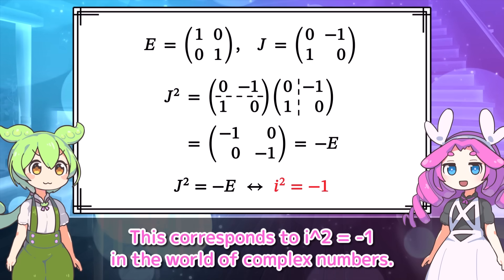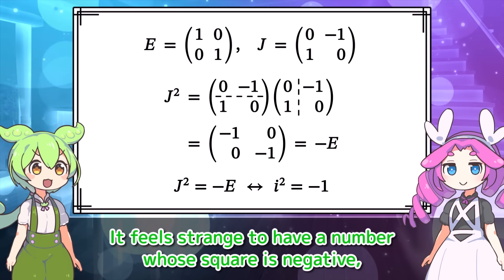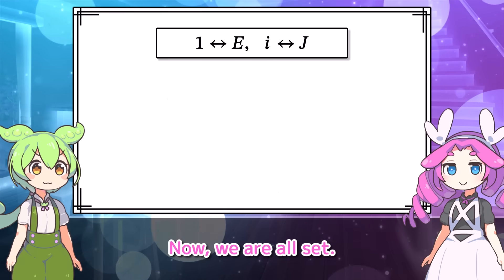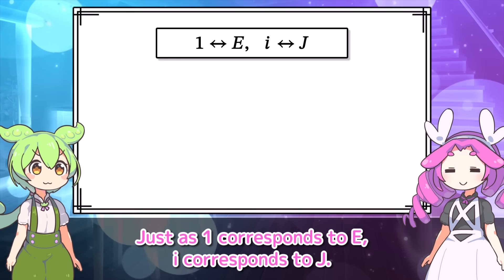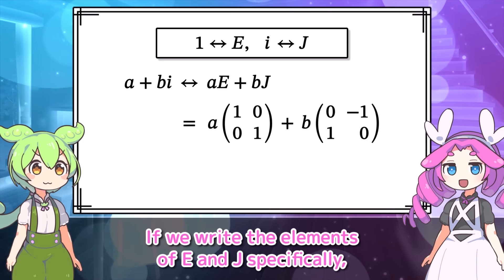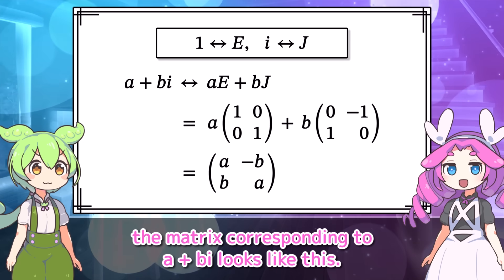This corresponds to I squared equals negative 1 in the world of complex numbers. It seems that J represents the imaginary unit I. It feels strange to have a number whose square is negative, but in the world of matrices, it's surprisingly easy to create such a thing. Now we are all set. Just as 1 corresponds to E and I corresponds to J, any complex number A plus BI corresponds to the matrix AE plus BJ.